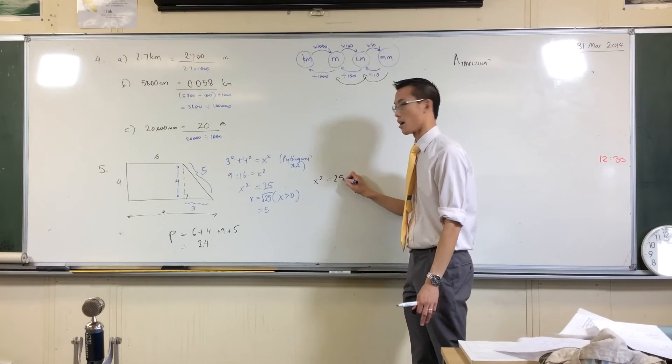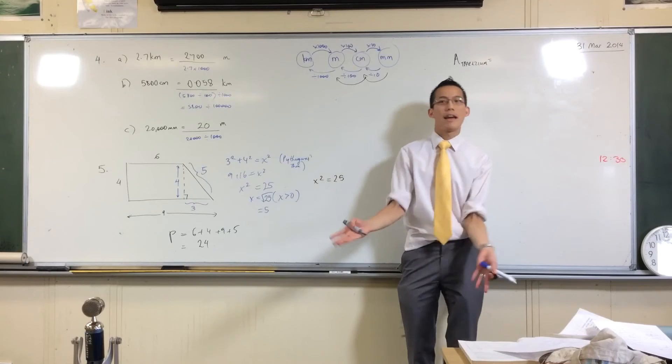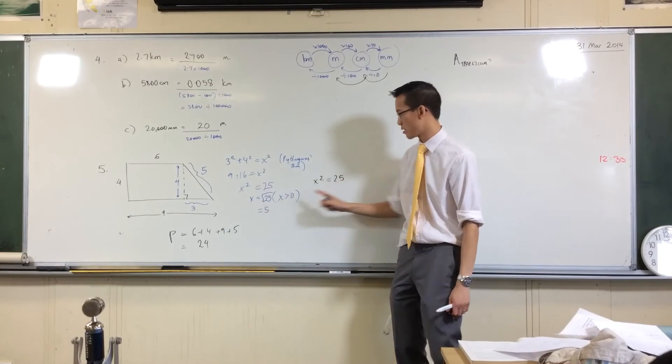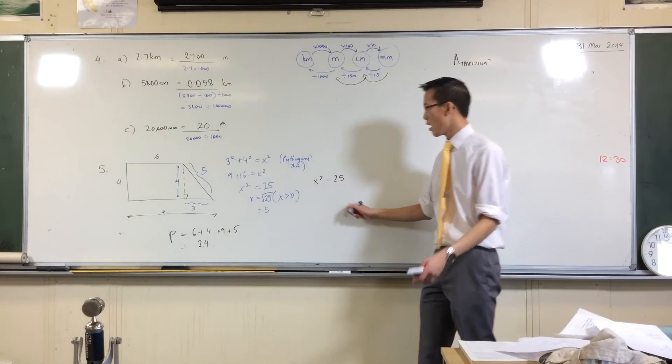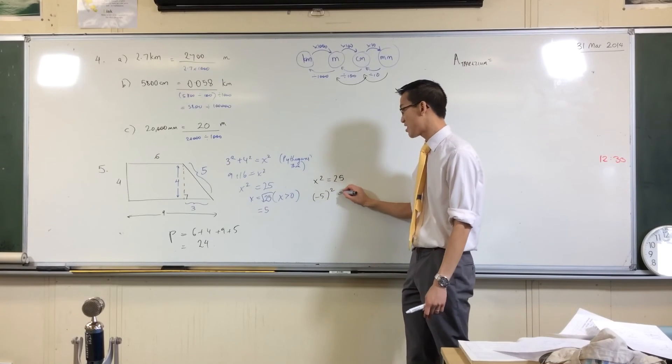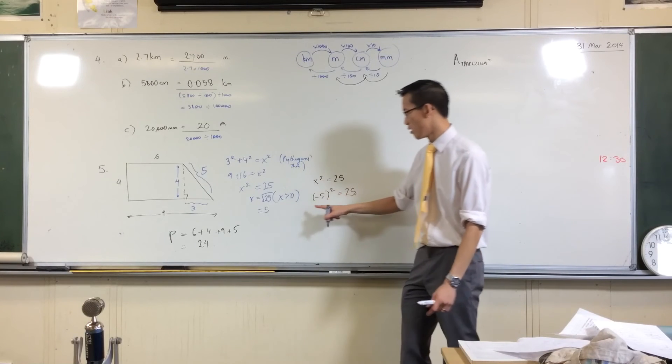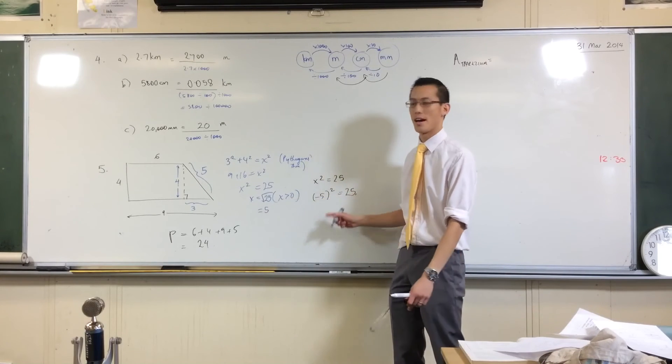See this line here? That's here. Now, the thing is, there's two answers to this. There's not just one answer. Because if I say, what's negative five squared, that's still 25. So it's like, how do I know? Is it five, or is it negative five?